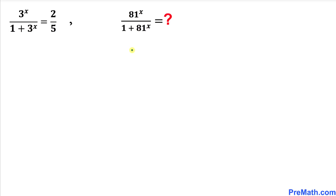Welcome to pre-math. In this video we have this rational equation: 3^x divided by (1 + 3^x) equals 2 divided by 5, and we are going to find the value of 81^x divided by (1 + 81^x).